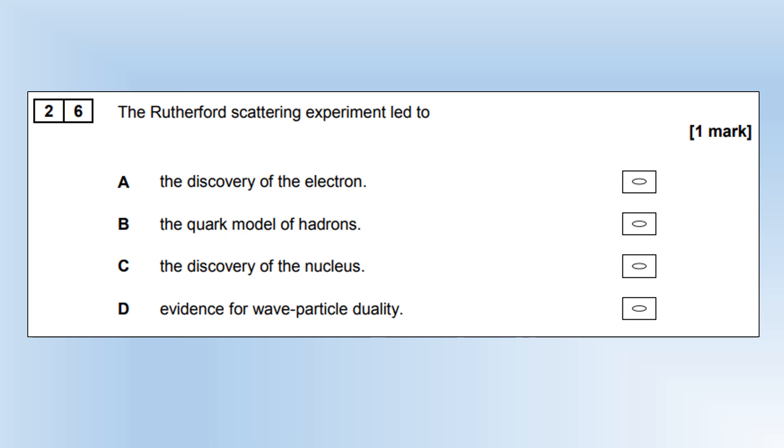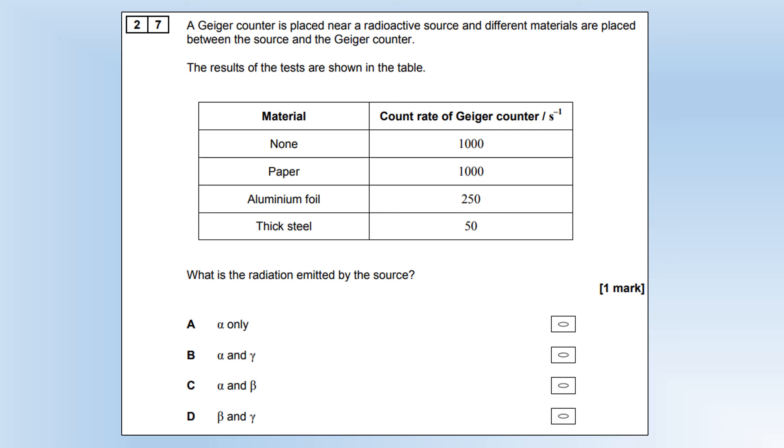Rutherford scattering experiment led to the discovery of the nucleus. Very straightforward. A Geiger counter is placed near a radioactive source, and different materials are placed between the source and the Geiger counter. What radiation is emitted by the source? When there's nothing, we've got a count rate of 1,000. When there's paper, we've still got a count rate of 1,000. That tells us there's no alpha. The count rate decreases after aluminum foil, which tells us there is some beta, but there is still some other activity. Once we've got thick steel, it drops even further. We've clearly got gamma as well. So we've got beta and gamma radiation, essentially. By the looks of it, we might even have some background, which is giving us some of that count rate.